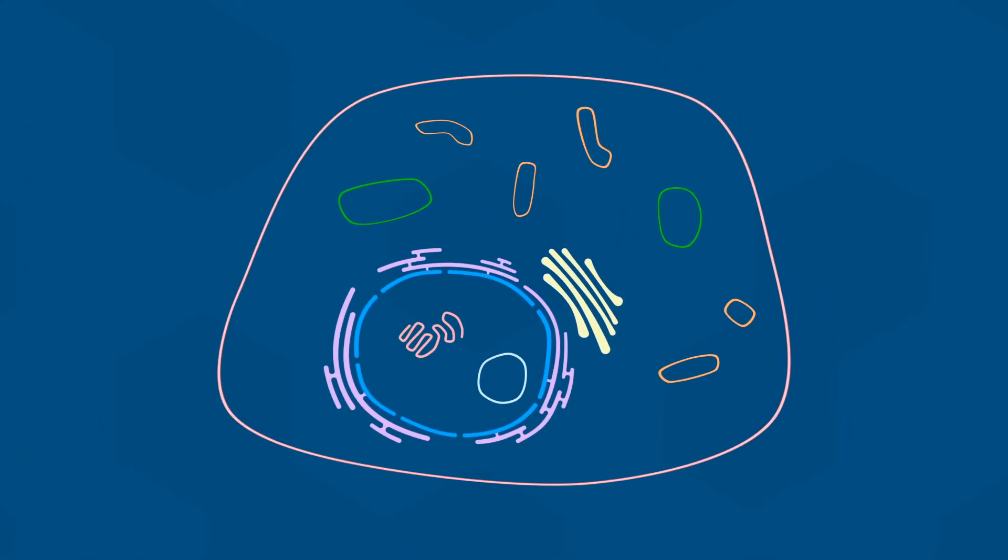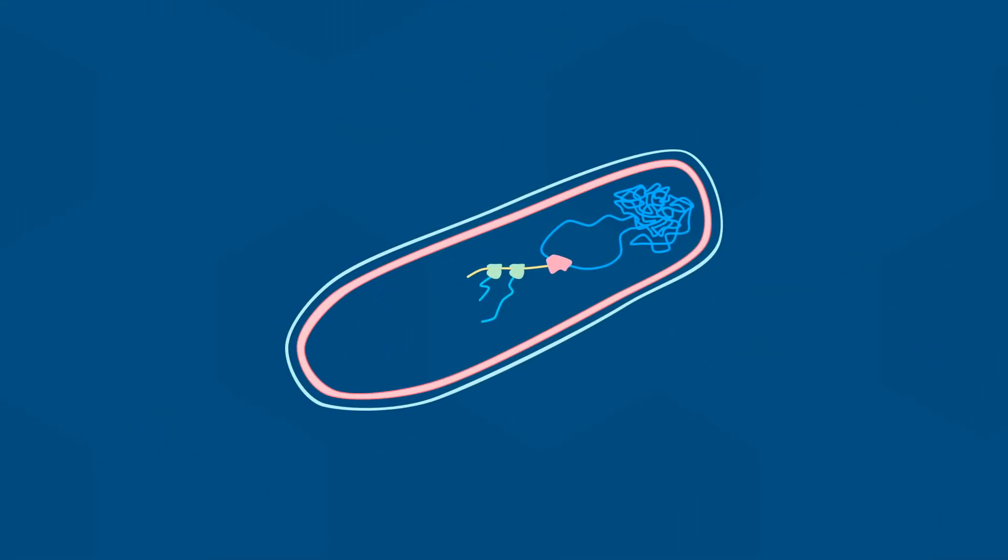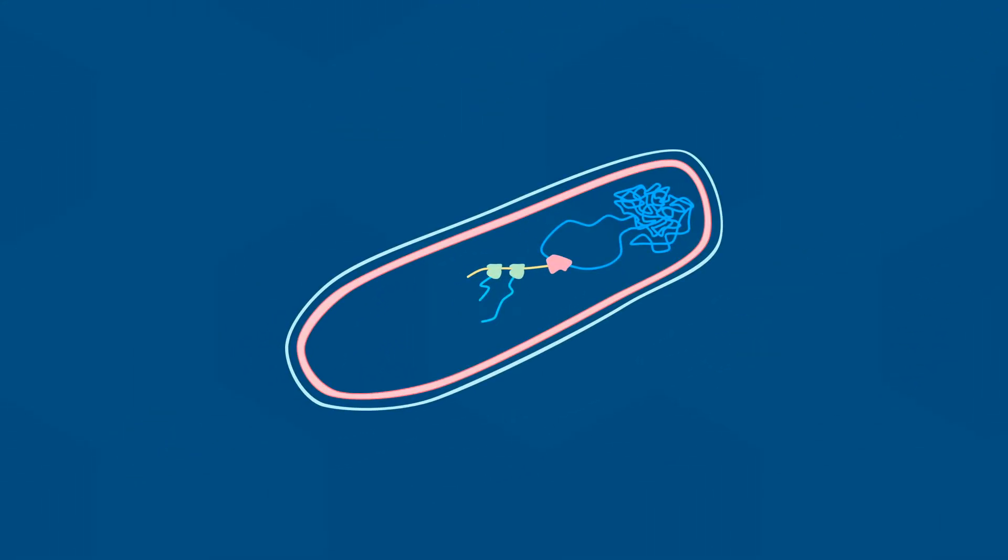Finally, we will compare how these components differ in different types of cells. For example, between eukaryotic cells like plant cells and prokaryotic cells such as bacteria.